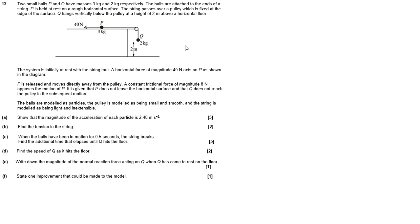Good afternoon, guys. Today we're going to be going through this question, which is a working grade assessment about connected particles over a pulley, specifically one that's on a vertical plane and one that's on a rough horizontal surface. We have two small balls P and Q with three kilograms and two kilograms respectively. The balls are attached to the end of the string. P is held at rest on this rough horizontal surface. The string passes over a pulley which is fixed at the edge of the surface and Q hangs vertically down. It is also two meters above the ground, and that's going to be useful for part C.